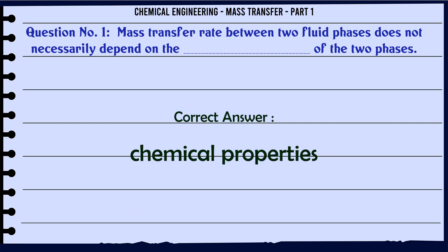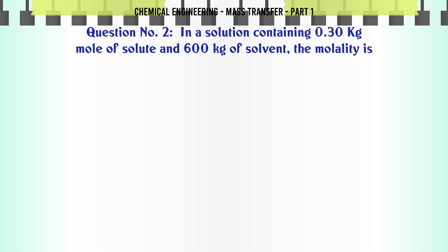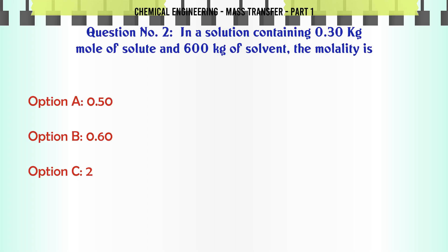The correct answer is Chemical properties. In a solution containing 0.30 kg mol of solute and 600 kg of solvent, the molality is A. 0.50, B. 0.60, C. 2, D. 1. The correct answer is 0.50.